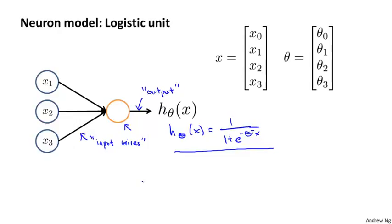When I draw a neural network, usually I'll draw only the input nodes x1, x2, x3. Sometimes when it's useful to do so, I'll draw an extra node for x0. This x0 node is sometimes called the bias unit or the bias neuron. But because x0 is always equal to 1, sometimes I draw it and sometimes I won't, just depending on whatever is more notationally convenient for that example.